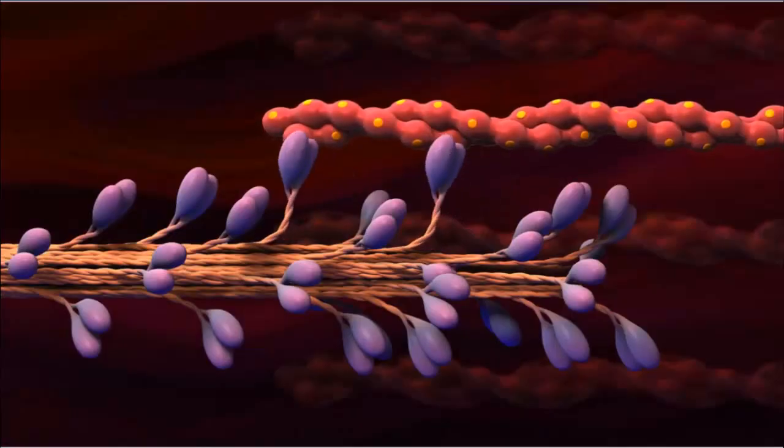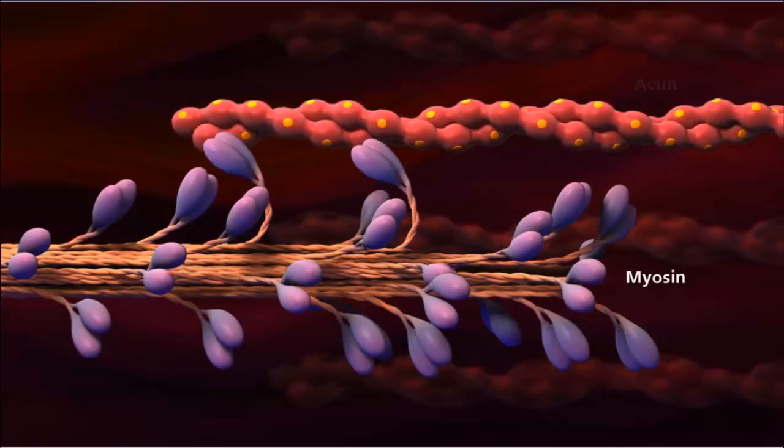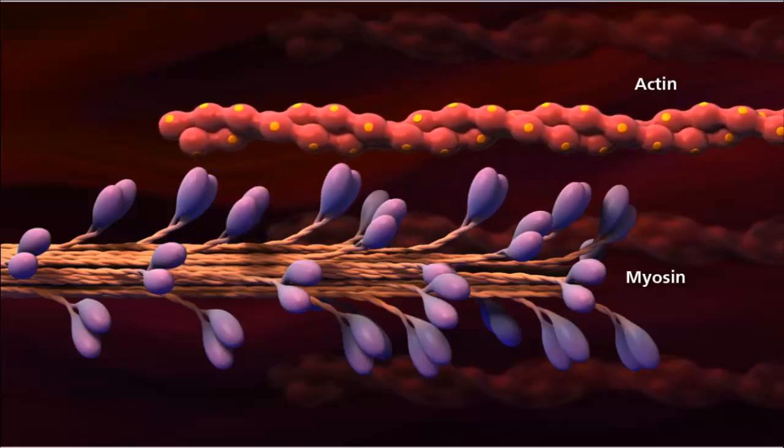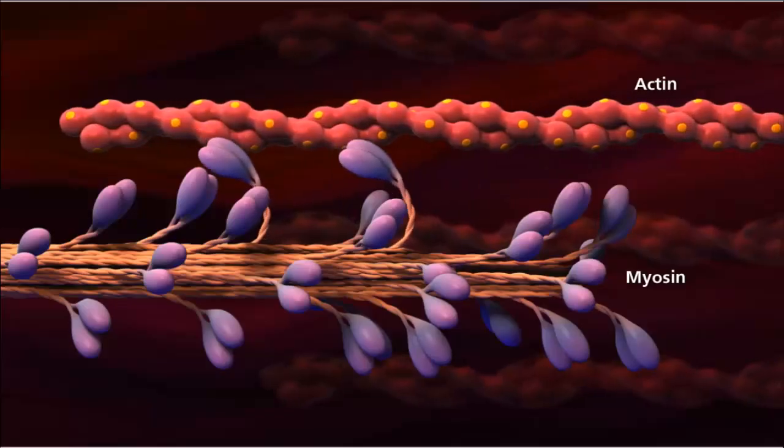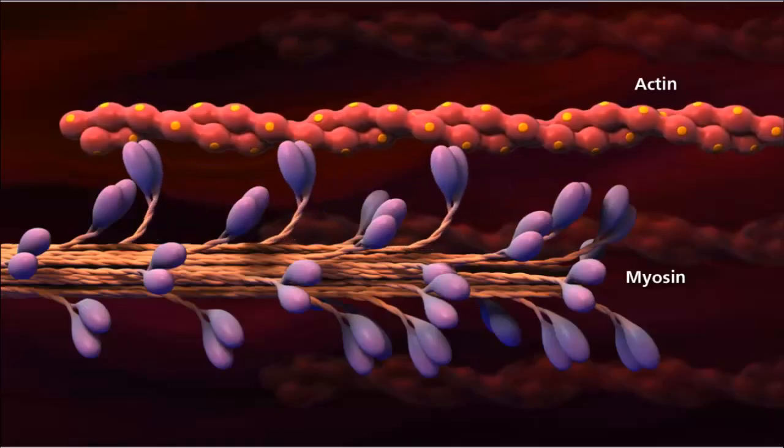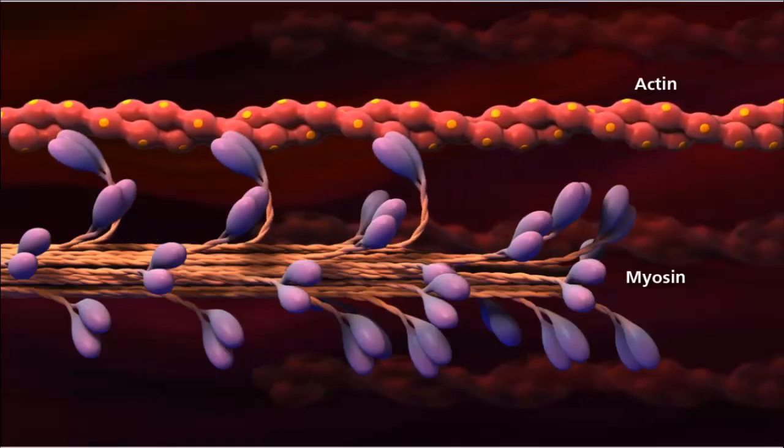Although the action between the filaments is described as sliding, the myosin filament actually pulls the actin along its length. The cross-bridges of the myosin filaments attach to the actin filaments and exert force on them to move. This action is known as the sliding filament mechanism of muscle contraction.